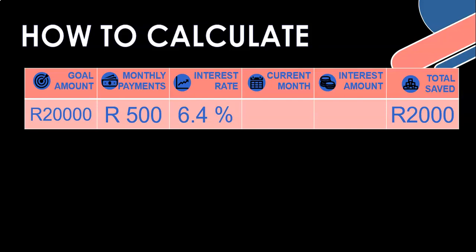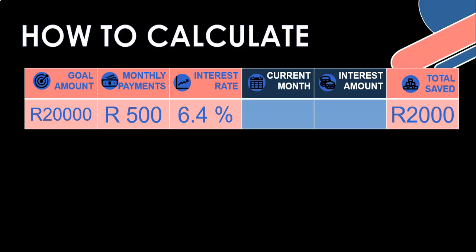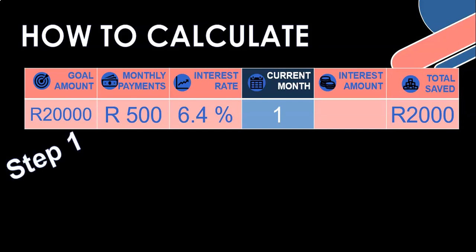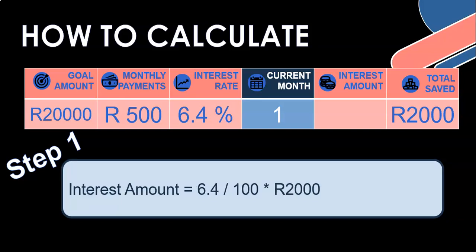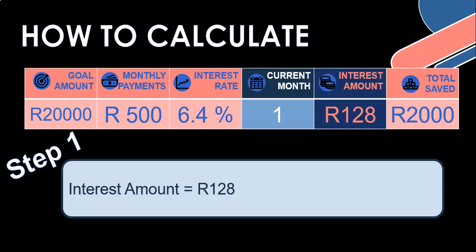For each month, we need to work out the interest amount and then add it to the total saved. There are two steps. Step one: calculate the interest. That calculates as the interest rate divided by 100 - because 6.4 is not yet a percentage, you must convert it. So 6.4 divided by 100, now it's a percentage. We take 6.4% of what you've saved - 6.4% of the 2,000 - and we work that out to be 128. That's how much interest we get after the first month. I'll store that into an interest amount variable.